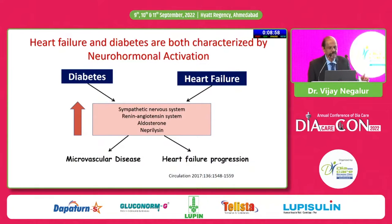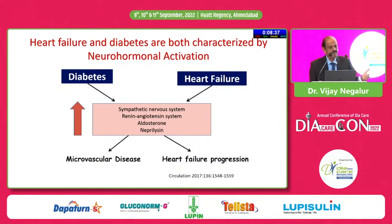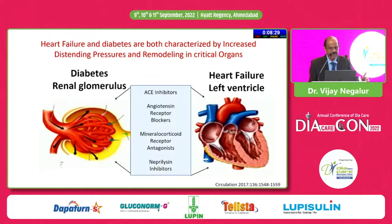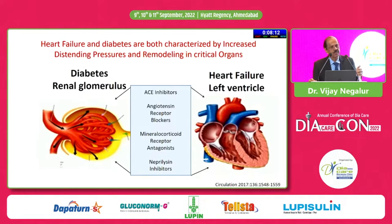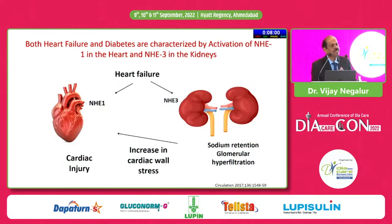Diabetes and heart failure are two sides of the same coin — both are characterized by sympathetic nervous system activity. Interestingly, it is sympathetic stimulation, not hyperglycemia alone, that drives microvascular complications. Both conditions are characterized by increased distending pressure in the left ventricle and in the glomerulus. Their treatments also overlap: ACE inhibitors, angiotensin receptor blockers, mineralocorticoid receptor antagonists, and neprilysin inhibitors are used for both conditions.